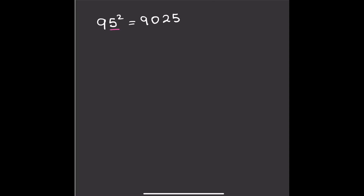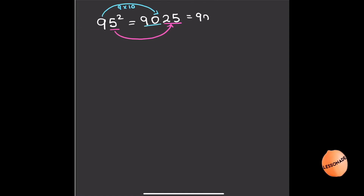First, we do 5 squared. 5 squared is 25, so we put the 25 right over here. And then next we're going to see what we do with the number 9. With number 9, we're going to times it by the next highest number, which is 10 in this case. So we're going to do 9 times 10, which is going to be 90, so we write the 90 down. And as a result, the answer is going to be 9,025.